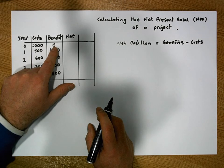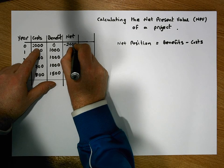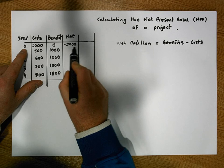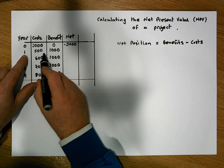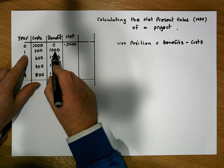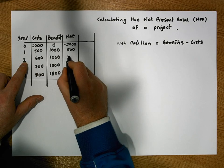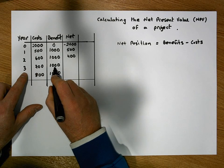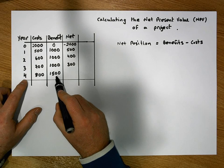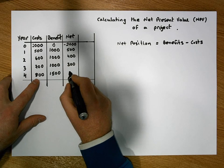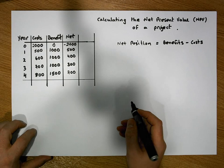In year zero, the net position is 0 minus 2,000 = −2,000 euros (a loss). After year one: 1,000 − 500 = 500. After year two: 1,000 − 600 = 400. After year three: 1,000 − 700 = 300. After year four: 1,500 − 800 = 700 euros.